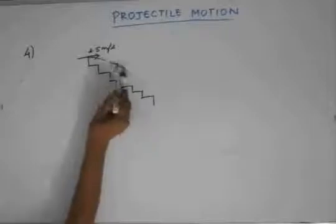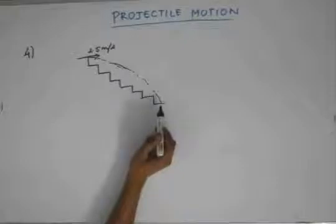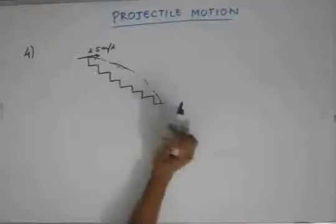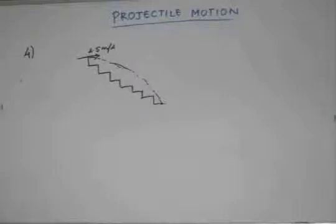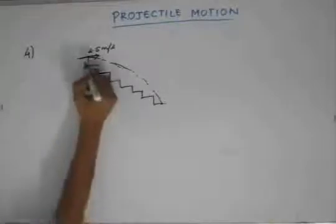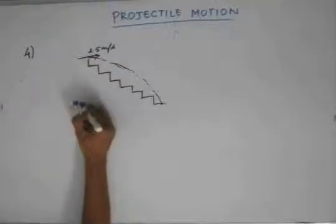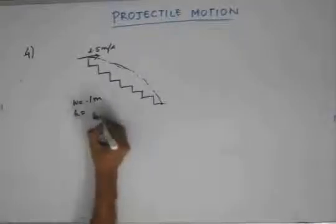The particle will follow a parabolic path, and we need to find how many steps it covers before it lands on one of the stairs — the first step, second step, and so on. The width of each stair is given as w = 0.1 meter, and the height of each stair is also 0.1 meter.